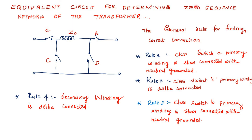I am going to explain the equivalent circuit for determining the zero sequence network of the transformer. This is the equivalent circuit which is used for determining the zero sequence current. Here A and B are meant for star connection and C and D are meant for delta connection. A and B represent star connection with grounded neutral, and C and D are closed when delta connection is present.